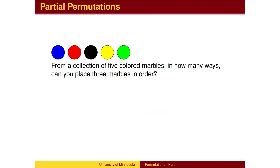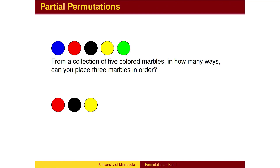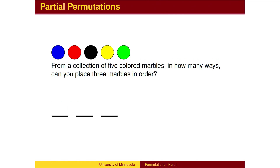Suppose we wish to place only 3 out of 5 marbles in order. In how many ways can this be done? Here are a few of the possibilities. To count the possibilities, we break this task into three choices according to the general counting principle.